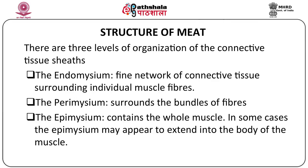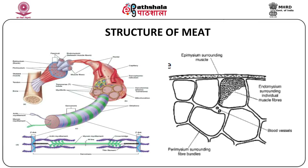The endomycium is the part of the connective tissue which surrounds the individual muscle fibers. The perimycium encloses the muscle bundles, which comprise the individual muscle fibers. The epimycium, the third level of connective tissue, encloses the whole muscle. In many cases the epimycium may appear to extend into the body of the muscle. This diagram gives a cross section of meat showing the three levels of connective tissue: the epimycium, the endomycium and the perimycium.